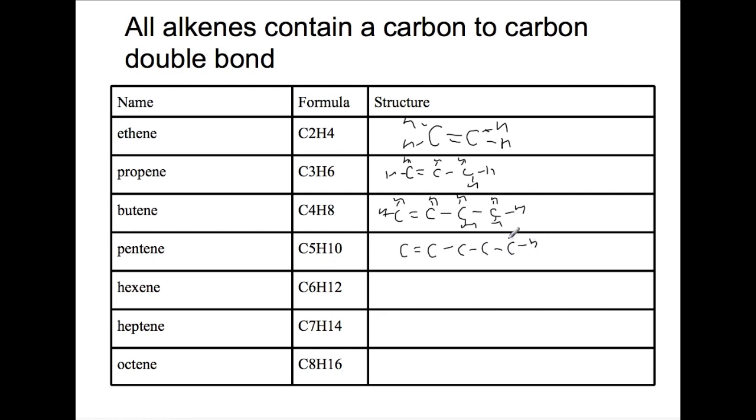Pentene has five carbons and ten hydrogens. Hexene has six carbons and 12 hydrogens surrounding it.